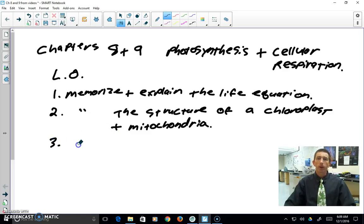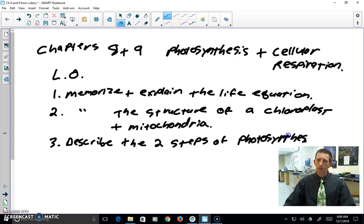So then learning objective number three, we're going to tackle photosynthesis first. So there are two steps for photosynthesis. So given a diagram of those steps, my goal is that you would be able to describe the process, describe the two steps of photosynthesis.